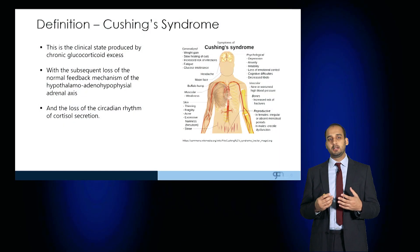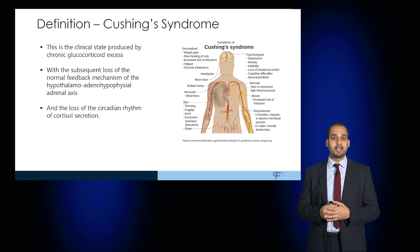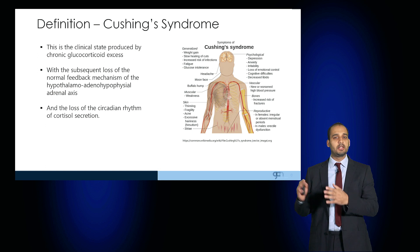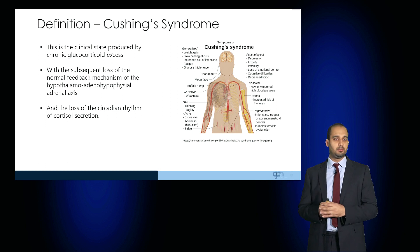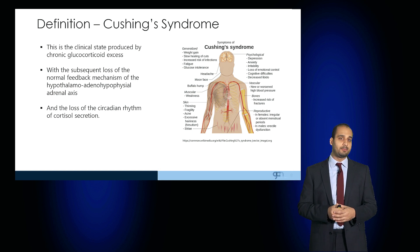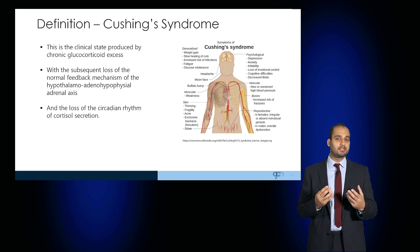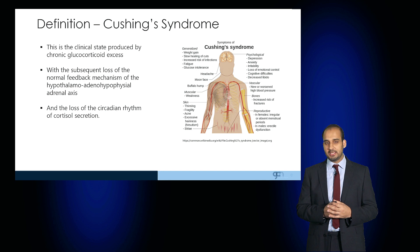Welcome to this Medicine Masterclass on Cushing's Syndrome. Cushing's Syndrome is a clinical state produced by chronic glucocorticoid excess, with a loss of the subsequent normal feedback mechanisms on the hypothalamo-adenohypophyseal adrenal axis. This also results in the loss of the normal circadian rhythm of cortisol secretion.